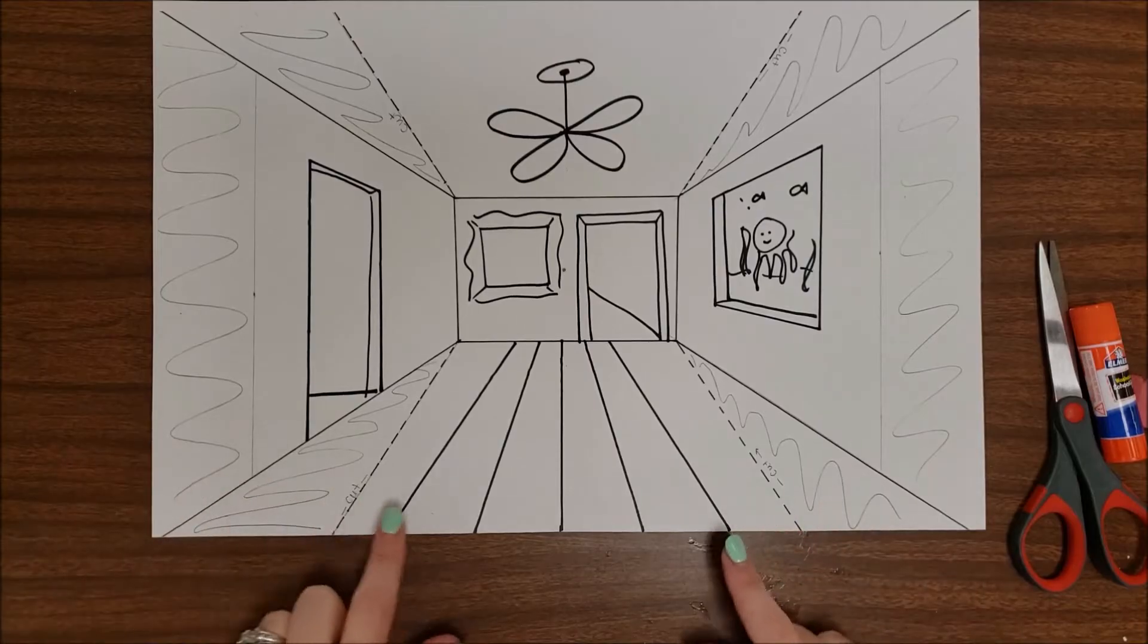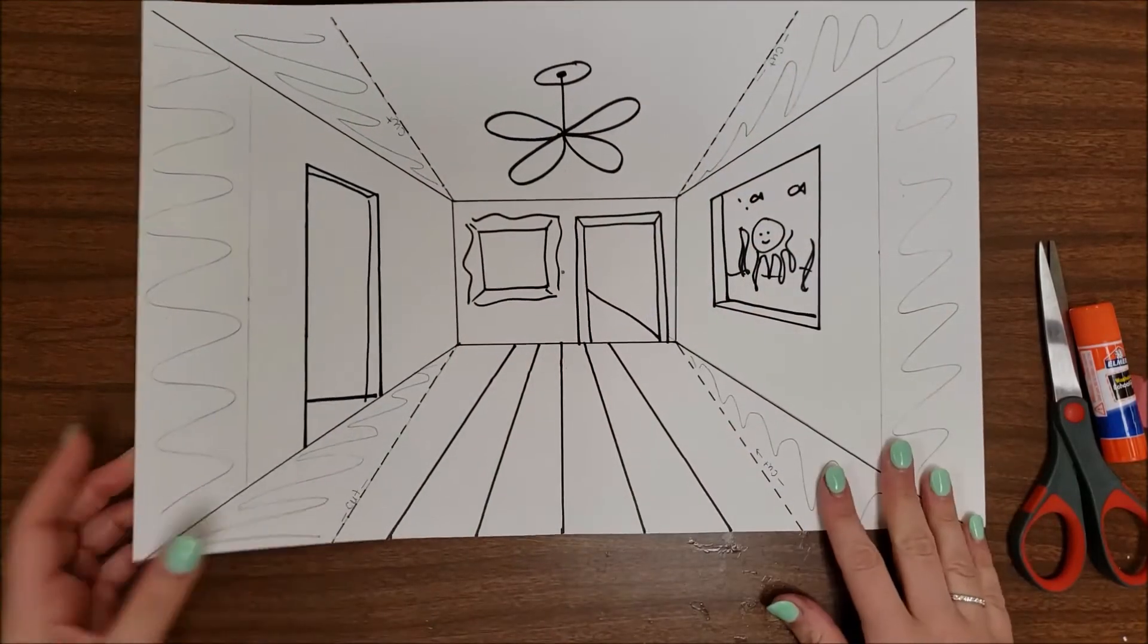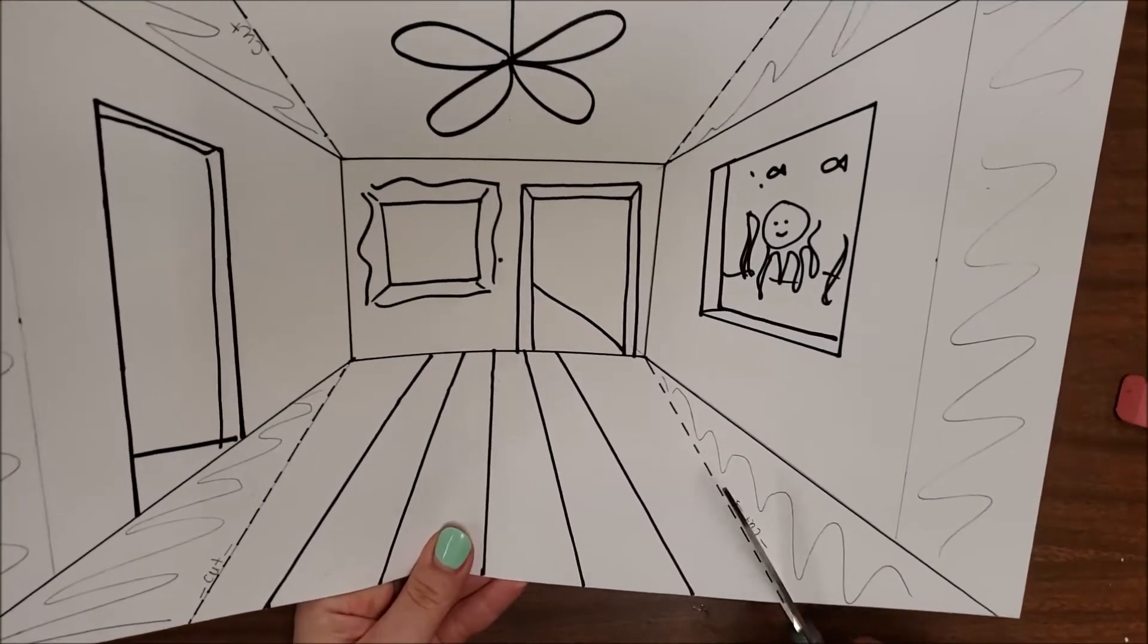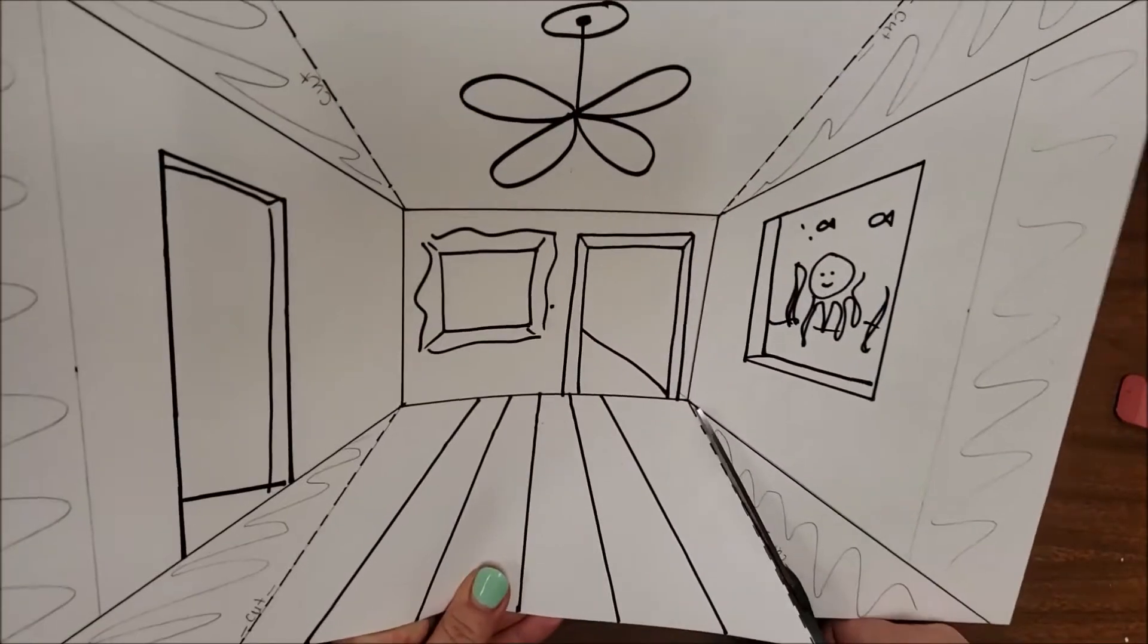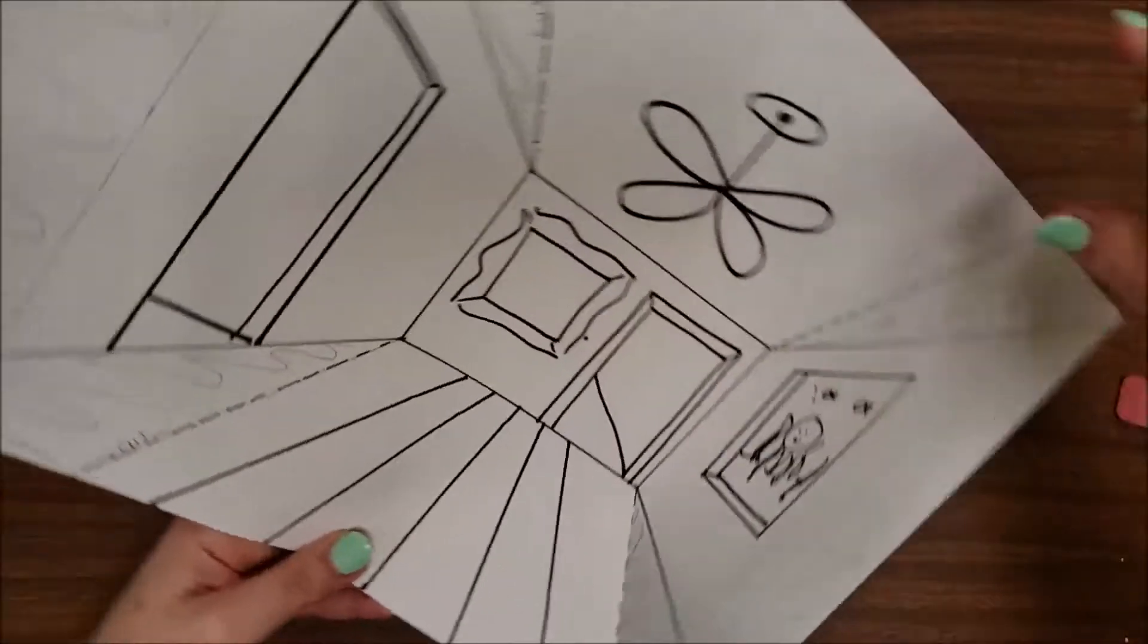Let's fast forward to the cutting part. On your template, you can see there are four inside dashed lines. That is where we need to cut. Basically, we're starting with our scissors and we're getting to the corners where the back wall and the side walls meet.